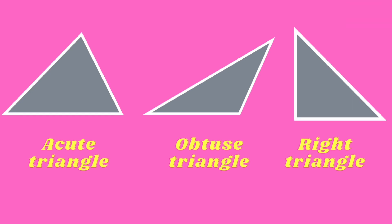Acute triangle, where all three angles are less than 90 degrees. Obtuse triangle, which has one angle greater than 90 degrees. And right triangle, which has one angle equal to 90 degrees.